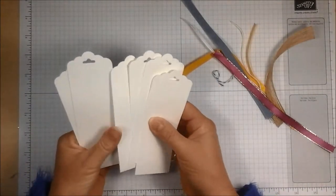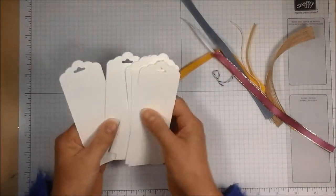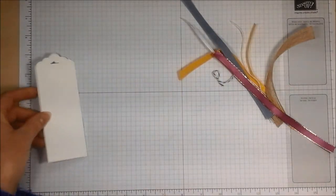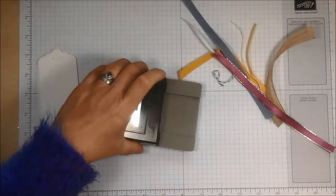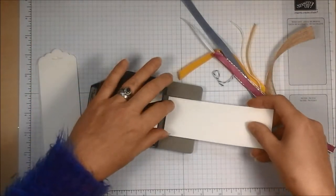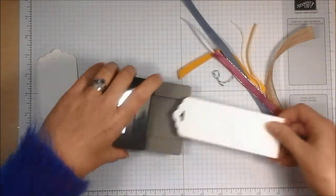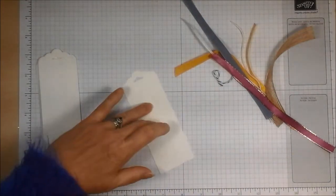These are bookmark blanks that I have created. They're pieces of thick whisper white card cut to two inches wide, and then I just use the scallop tag topper punch to punch the slot and the shape at the top.